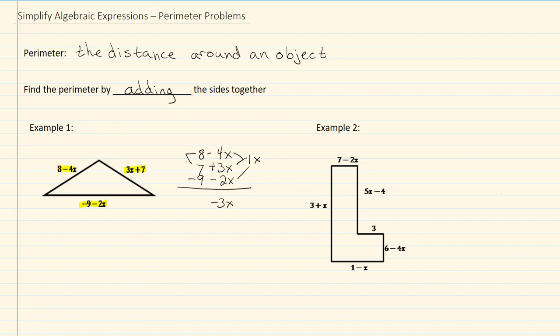On my number side, I have 8 plus 7 which would give me 15, and then 15 minus 9 which will give me 6. So my answer for my triangle is going to be 6 minus 3x.